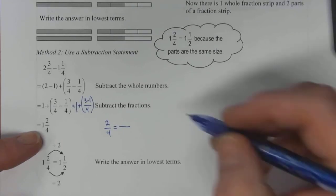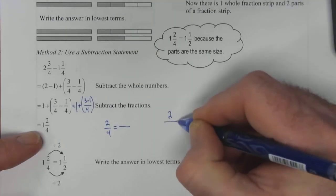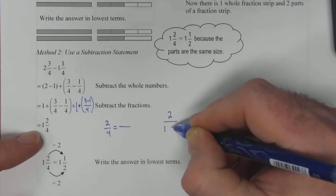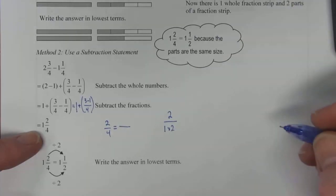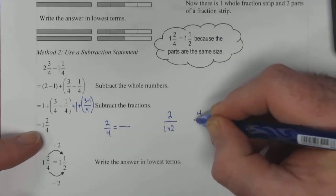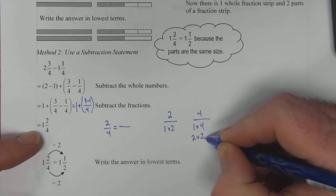Now if we list two and do the factor tree or factor tower, one times two gives you two and that's all there is to the factor tower for that. For four we've got one times four and two times two.